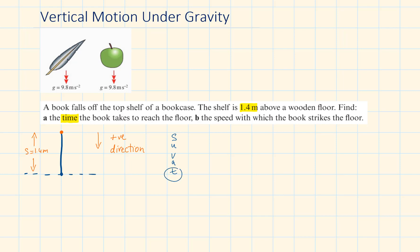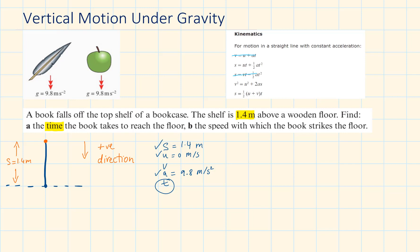We need to find T, so we circle that letter. We have S given as 1.4. We can assume the book has an initial speed of 0. Since the book is moving freely under gravity, the acceleration is equal to 9.8. We don't have V given and we don't need to work it out, so we pick the formula which doesn't contain V: S equals UT plus half AT squared.